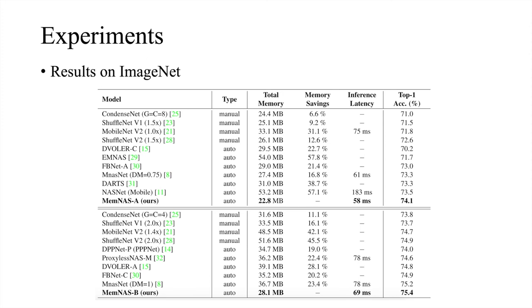On ImageNet, our MemNAS achieves 75% accuracy, which is 0.7% higher than MobileNet v2 with 42% less memory requirement.